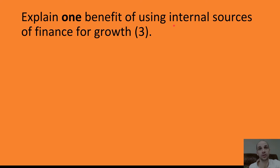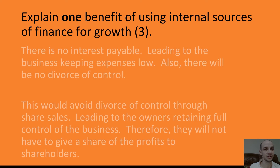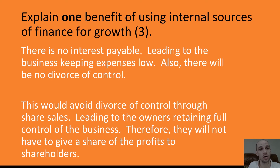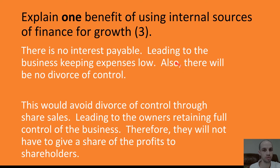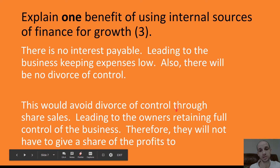Explain one benefit of using internal sources of finance for growth. Pause the video and have a go. First answer: 'There's no interest payable' — one mark — 'leading to the business keeping expenses low' — two marks. But then: 'Also, there will be no divorce of control.' The big problem here is the candidate has used 'also' and identified another benefit — the question clearly says one benefit. This answer would only get two out of three. The second answer: 'This would avoid divorce of control through share sales, leading to the owners retaining full control. Therefore, they will not have to give a share of the profits to shareholders.' That gets three marks.